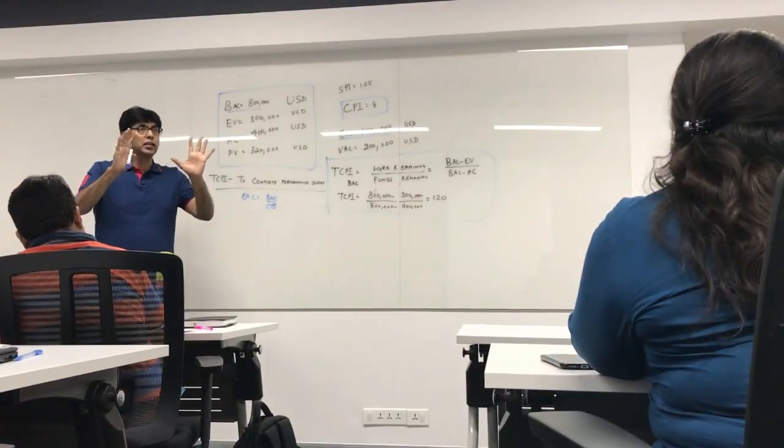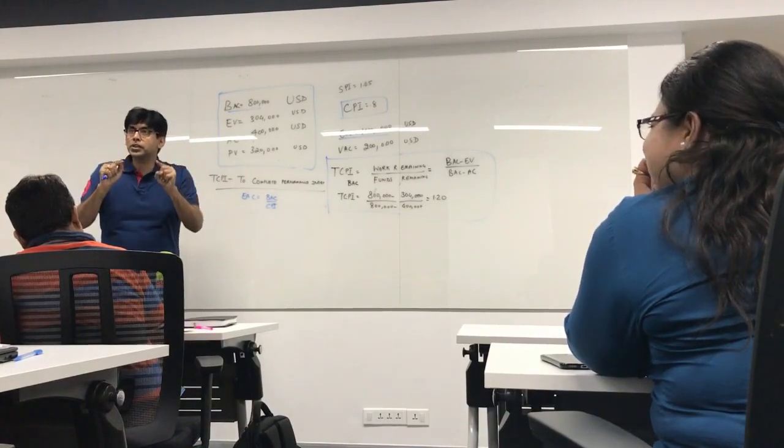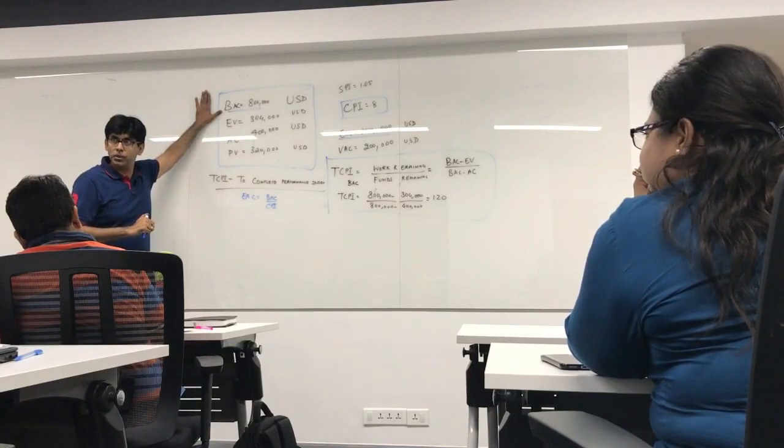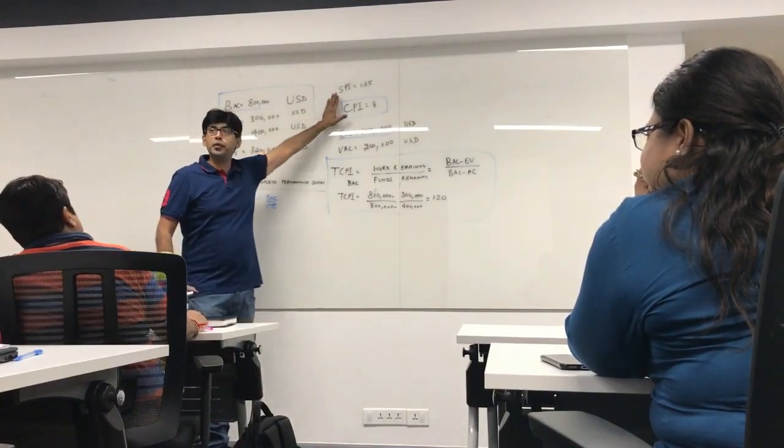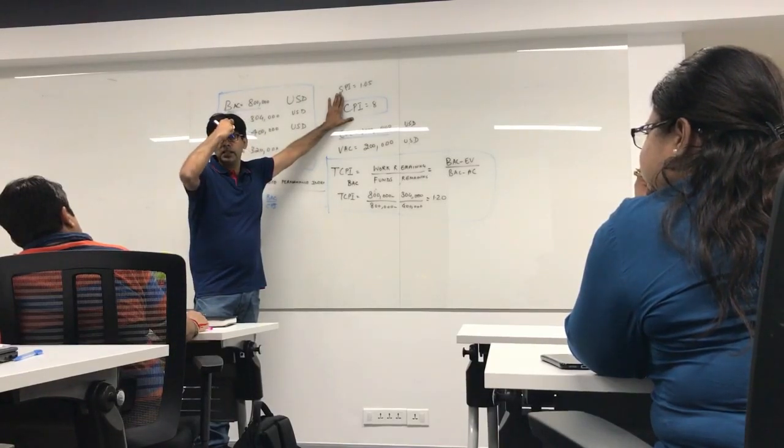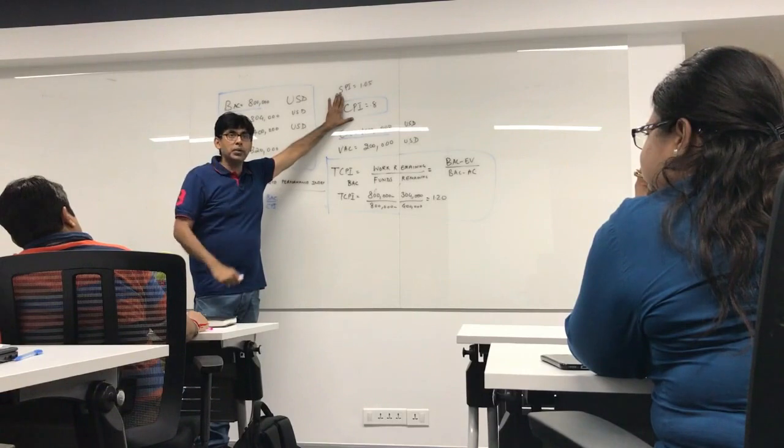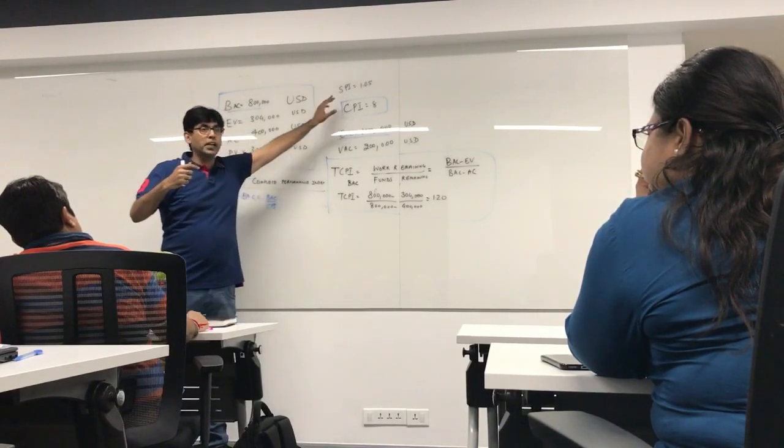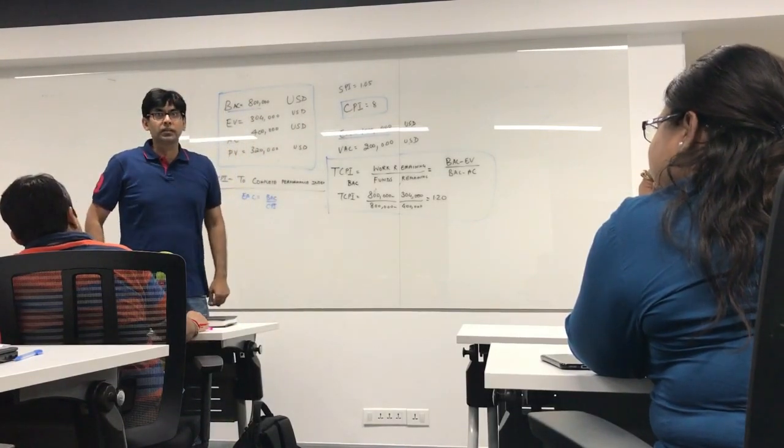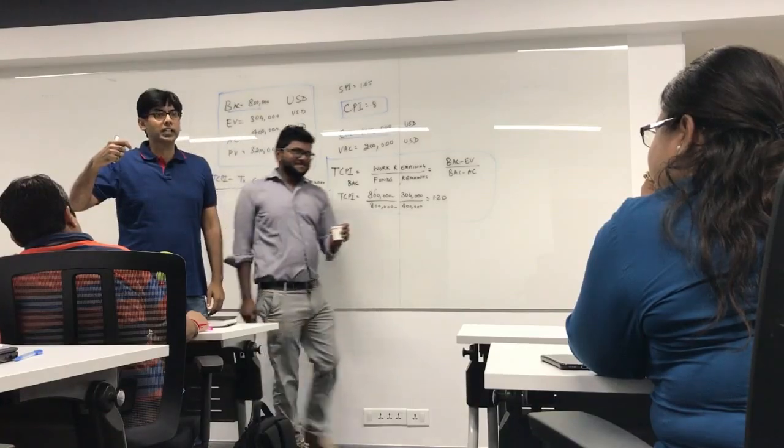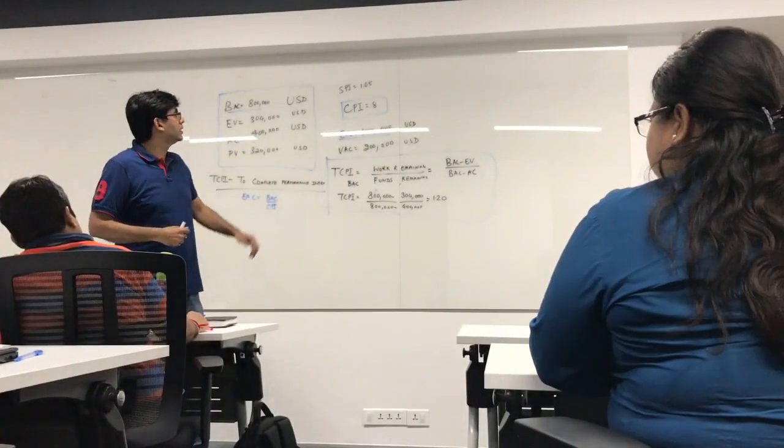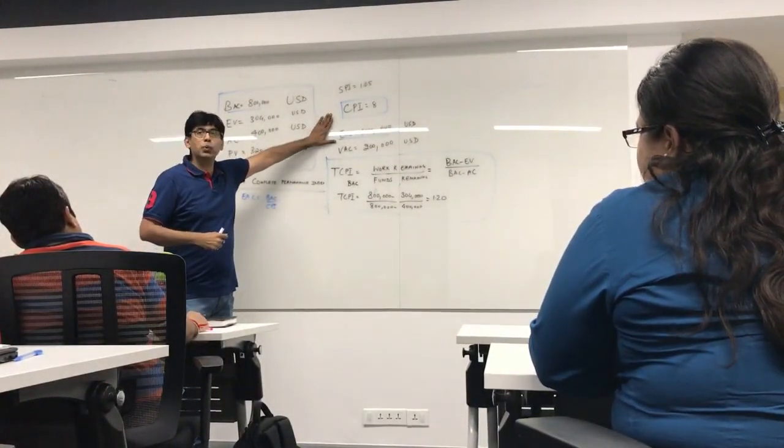Now we are almost at the middle of the project. Our project is 800,000 USD project. Our CPI, the cost performance index is 0.8. Since we are close to the middle of the project, we need to find out based on the CPI of 0.8 what will be my projected cost at completion. I calculated my EAC estimated completion which is projected cost at completion and find out that my EAC is 1 million USD.